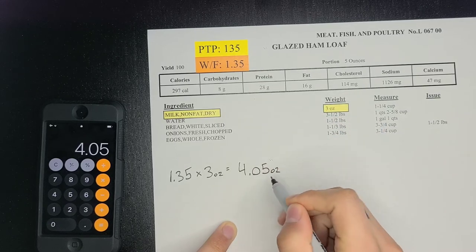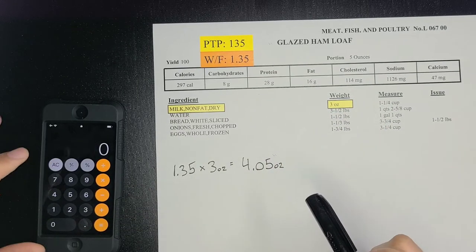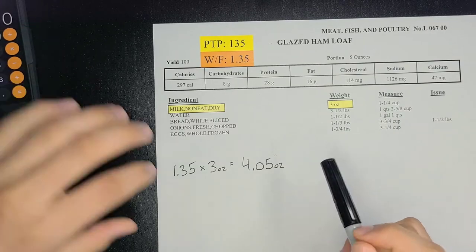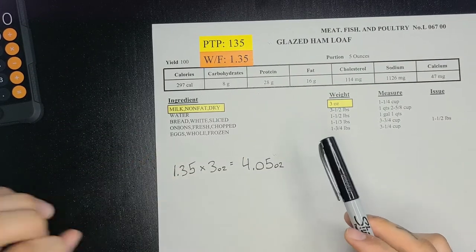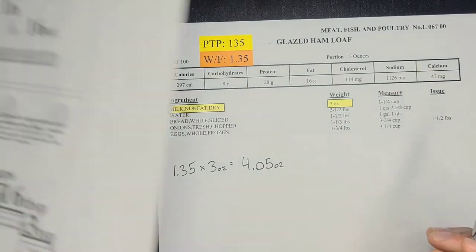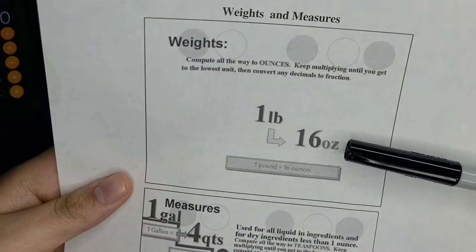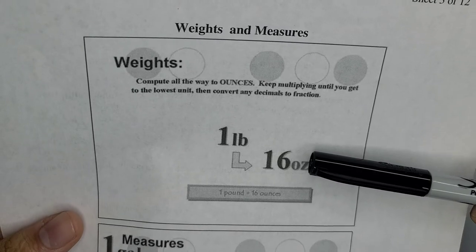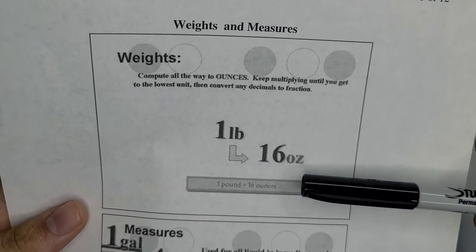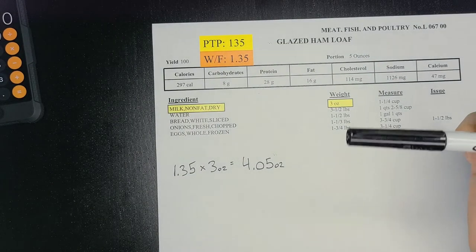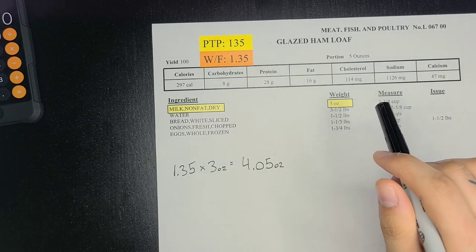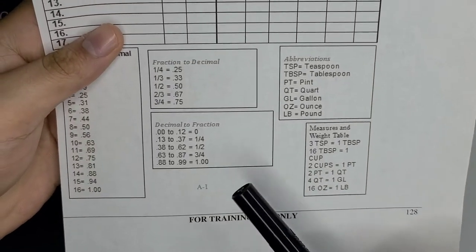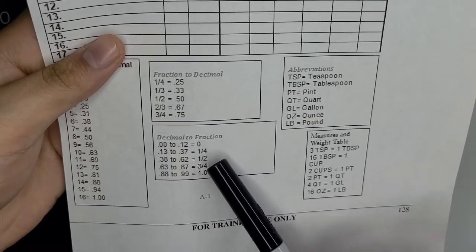Label everything, but you can't leave it like that because you want to get it to a simplest form and you want to get it to its lowest unit. In this case, ounces is your lowest unit and you can't go any lower than that. So when you can't go any lower than ounces, you have to go to your decimal to fraction sheet to determine what that decimal will equal.